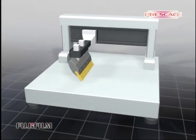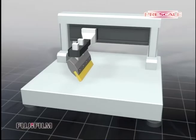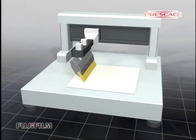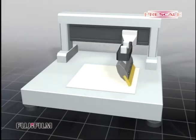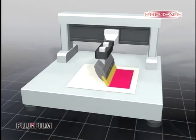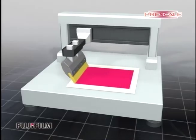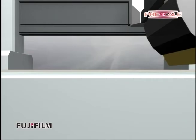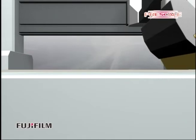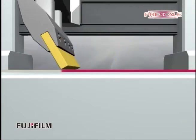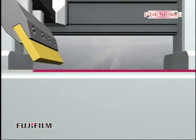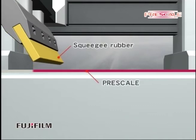The next application is a measurement of the pressure from a squeegee on the screen mask. Set the Prescale on the screen mask and bring the squeegee rubber into contact with its surface. Run the squeegee rubber along the surface without losing contact at a constant speed to check the pressure balance.